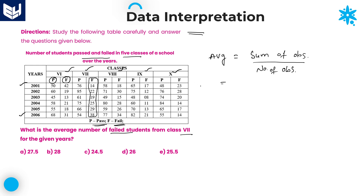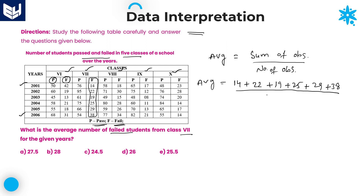Now, average is equal to the sum of all failed students from class 7. Here it is 14 plus 22 plus 19 plus 25 plus 29 plus 38, whole divided by number of years. How many years are we talking about? Total 6 years — 2001, 2, 3, 4, 5, 6 — divided by 6.